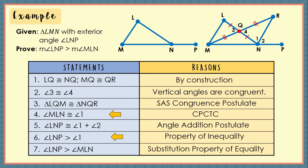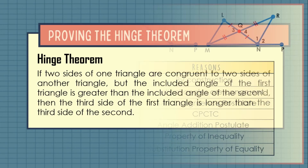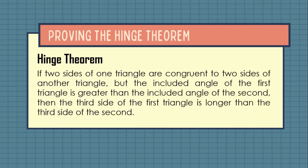And we are now done with the exterior angle inequality theorem. And finally, we are down to our last theorem — the hinge theorem. This states that if two sides of one triangle are congruent to two sides of another triangle, but the included angle of the first triangle is greater than the included angle of the second, then the third side of the first triangle is longer than the third side of the second.